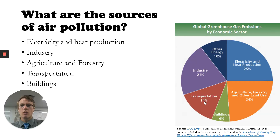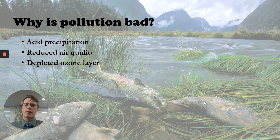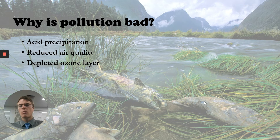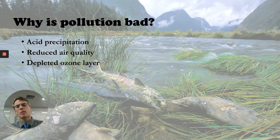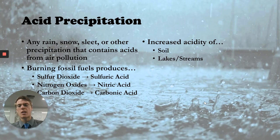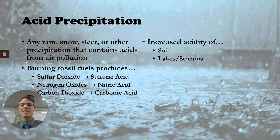So why is air pollution bad? There are three reasons in this video: one is acid precipitation, two is reduced air quality, and three is depleted ozone layer. Acid precipitation is any rain, snow, sleet, or other precipitation that contains acids from air pollution.